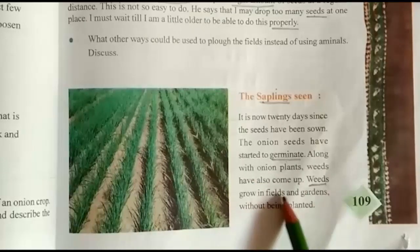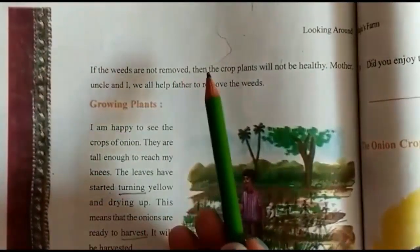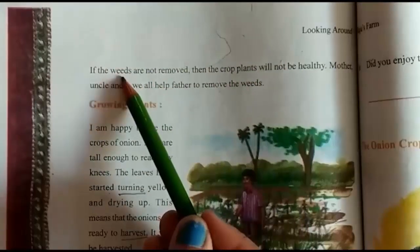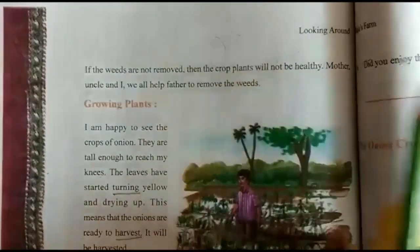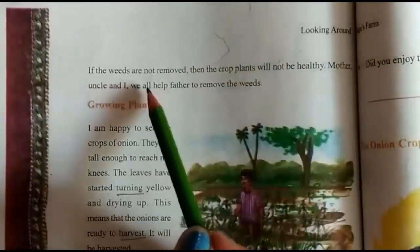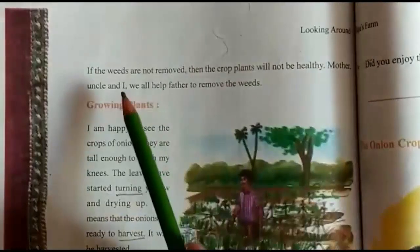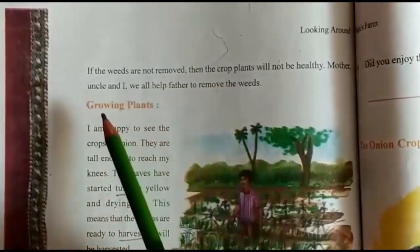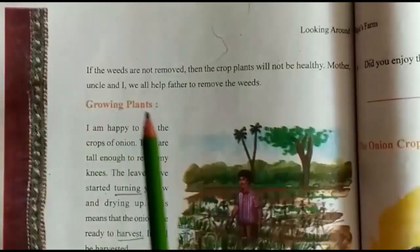If the weeds are not removed, then the crop plants will not be healthy. We have to remove the weed plants; otherwise the onion plants will not be healthy. Mother, uncle, and Raju all help father to remove the weeds. Now the onion crop has grown — that is the growing plants stage.